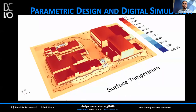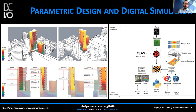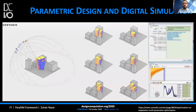Even with sophisticated parametric tools available today, many designers still prefer to do energy analysis at a later design stage. However, in recent years, many architects and designers have started using handy tools like Ladybug and Honeybee, which support parametric design within Grasshopper and Rhino, to support energy performance decision making and optimization.